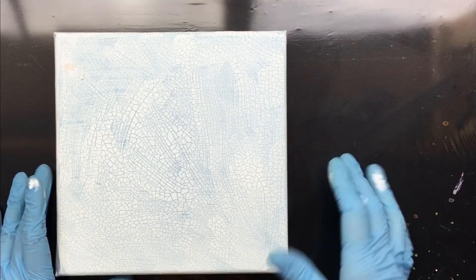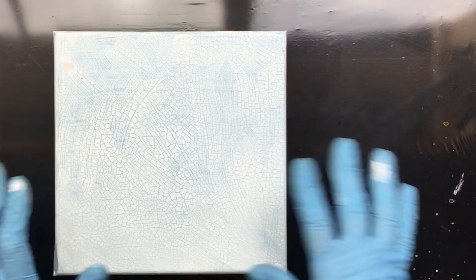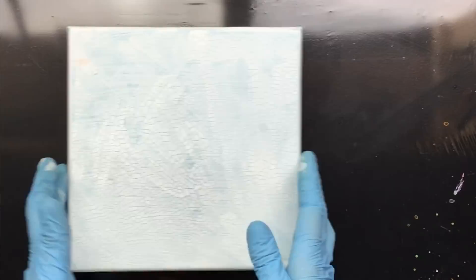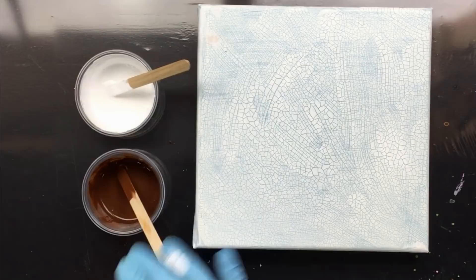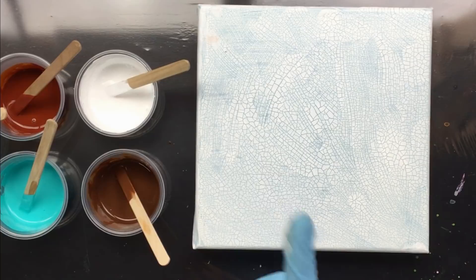I'm going to leave a lot of negative space because I like the cracked background. We don't want to pour right over it, just do a little thing on top. The colors I've chosen are titanium white, burnt umber, burnt sienna, and two colors of turquoise.